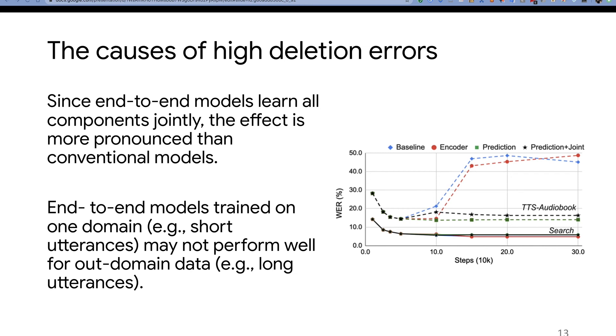We first analyze the cause of deletion errors. Since end-to-end models learn all the components jointly, the effect is more pronounced than conventional models. End-to-end models trained from one domain, such as short utterances, may not perform well for out-of-domain data.